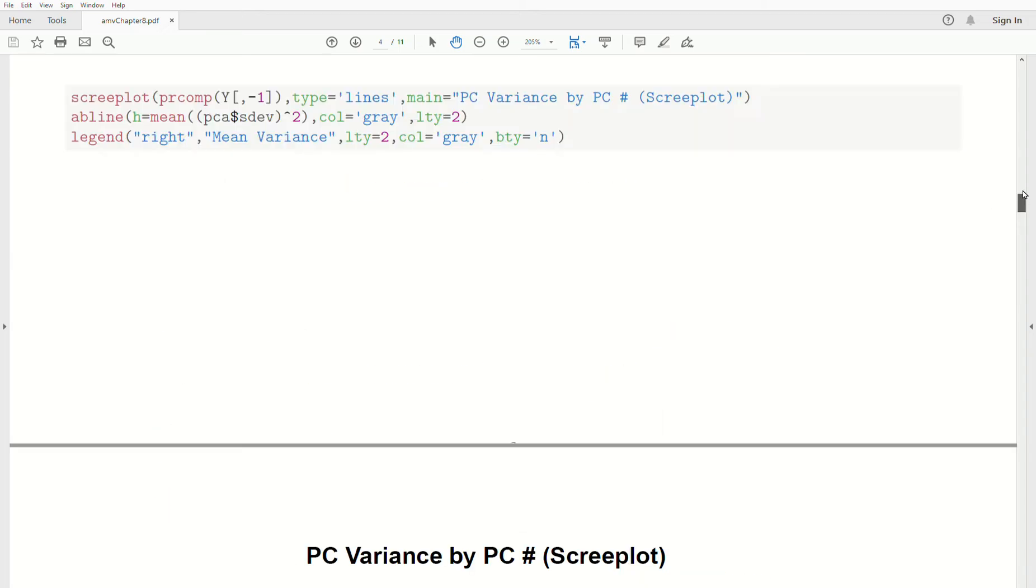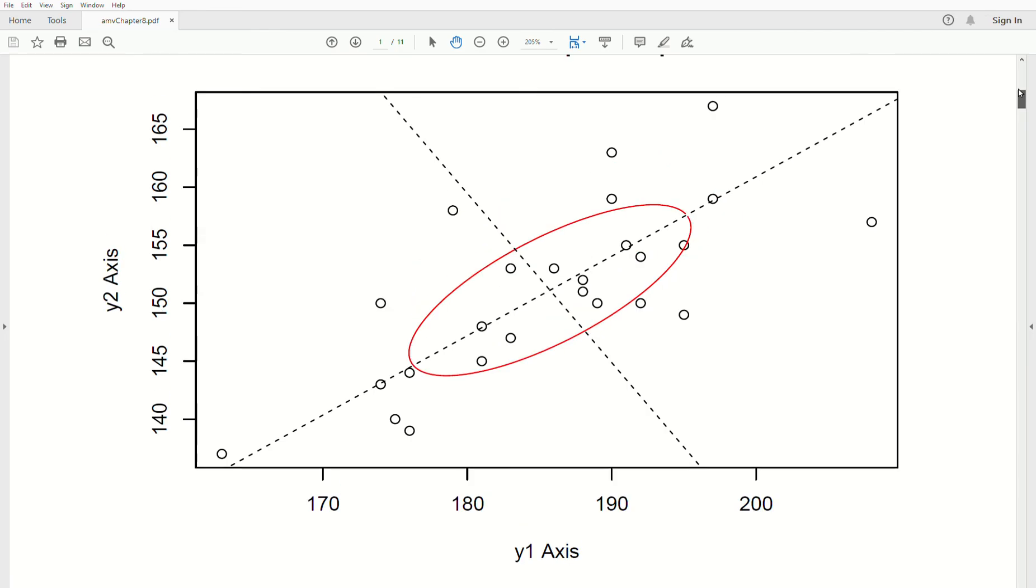The scree plot helps us determine how many principal components we should keep to explain the data. When the original plot is spread out, we need both variables to describe the data, but by rotating the data, most of the variance may be captured in the first principal component, so maybe we only need the first principal component to explain all this data, or maybe just the first two of many to explain all the data.